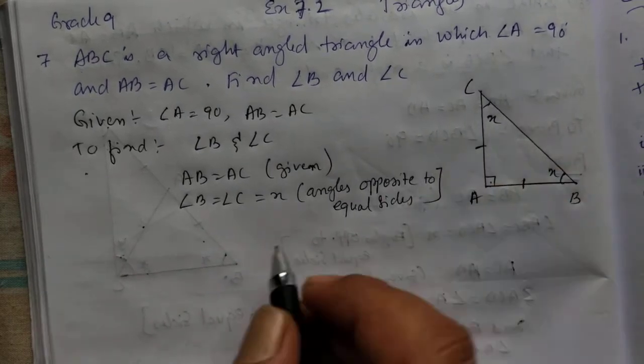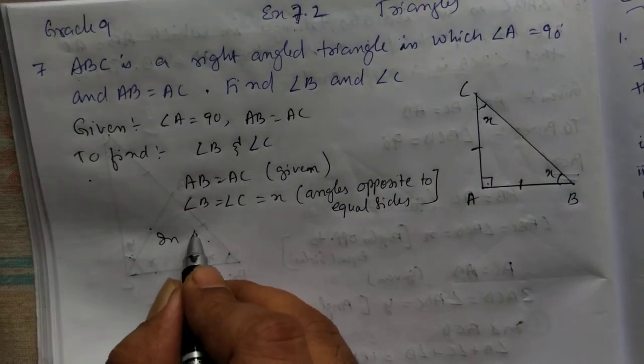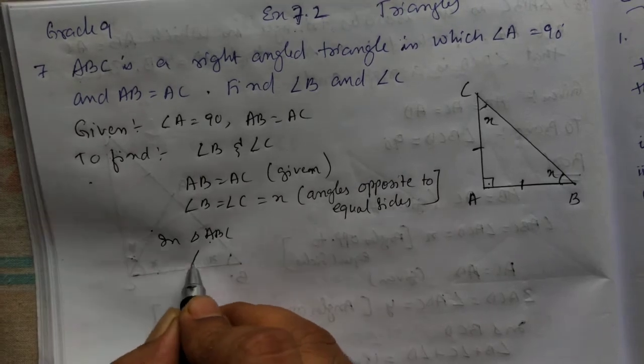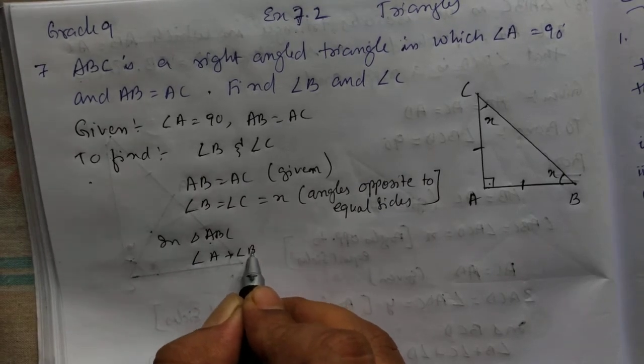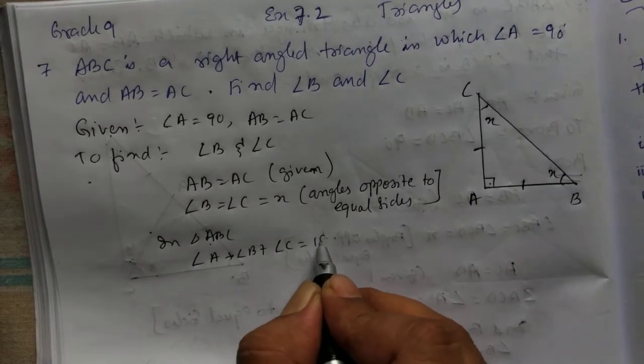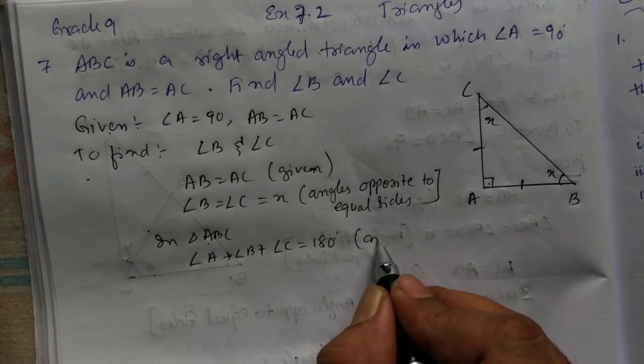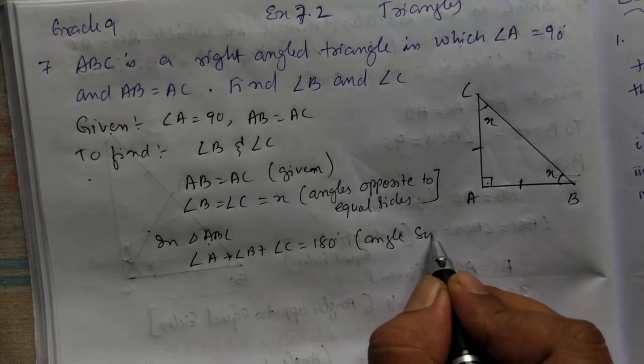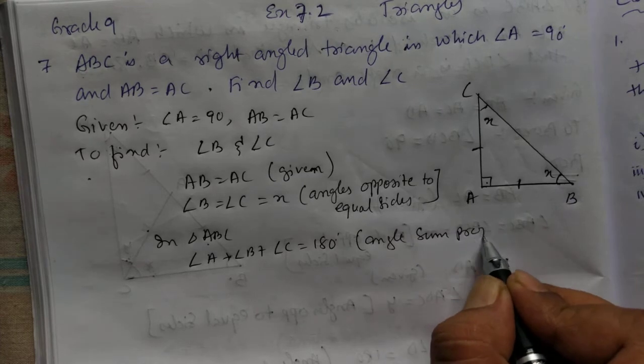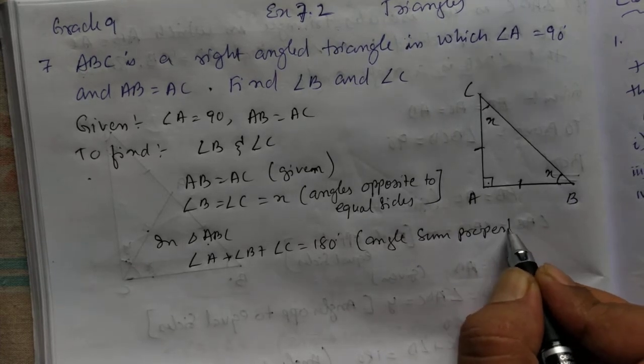Now, find the sum of the angle of triangle. In triangle ABC, angle A plus angle B plus angle C is 180 degree. Reason is: angle sum property.